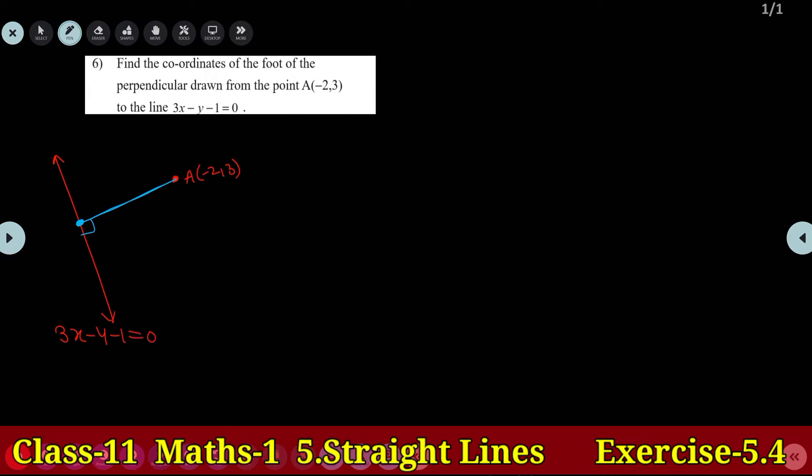We already know how to find the intersecting point of two lines: solve their equations simultaneously to get the intersecting point. The equation of the first line is already given, but we have to find the equation of the perpendicular line. The point A(-2, 3) lies on the perpendicular line, but we don't yet know the slope of the perpendicular line.